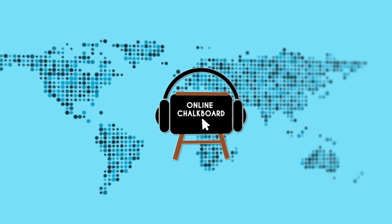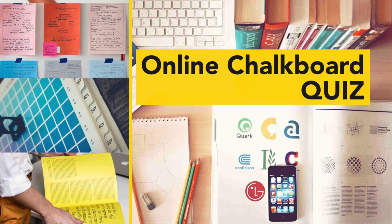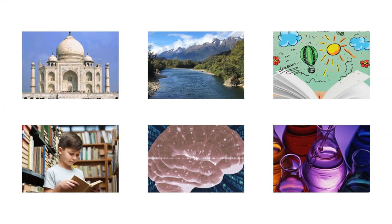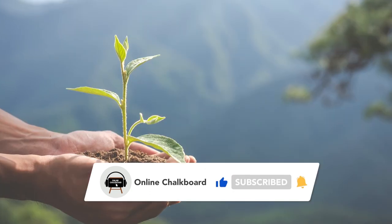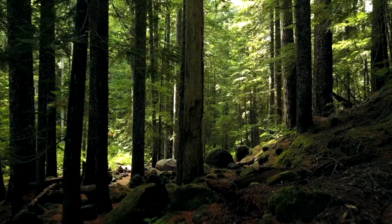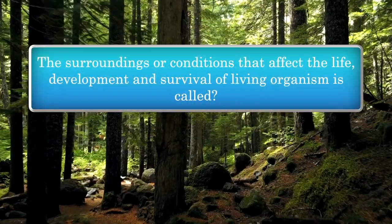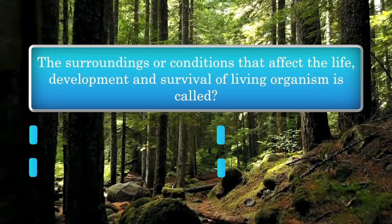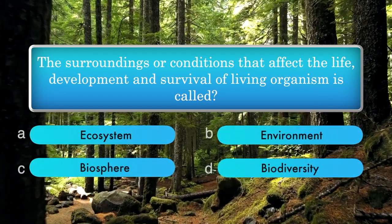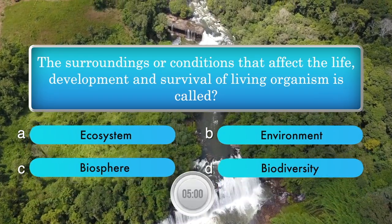Hello dear friends, welcome back to Online Chalkboard. Today we are going to discuss some important questions for Environment Day quiz competitions. Don't forget to subscribe to our channel, Online Chalkboard. Let's start. First question: the surroundings or conditions that affect the life, development, and survival of living organisms is called — options: ecosystem, environment, biosphere, biodiversity.